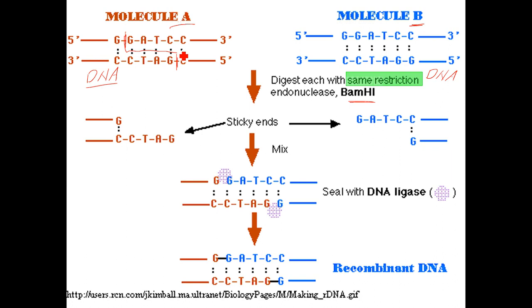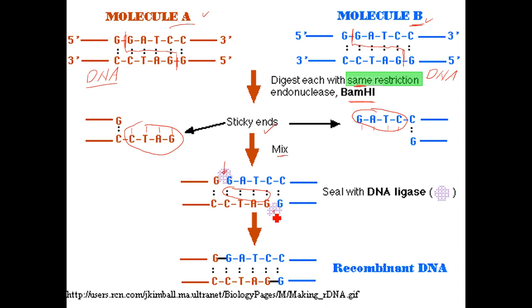The same cut is done with both molecule A and molecule B, and what it generates are these overhanging sticky ends. They are called sticky ends because single-stranded bases don't like to be single-stranded — they like to attach to complementary bases. Because we cut both A and B with the same restriction enzyme, they have the same complementary sticky ends. Mix them together and they adhere, forming hydrogen bonds between those sticky ends. We also need to seal off the backbone between the adjacent phosphates.